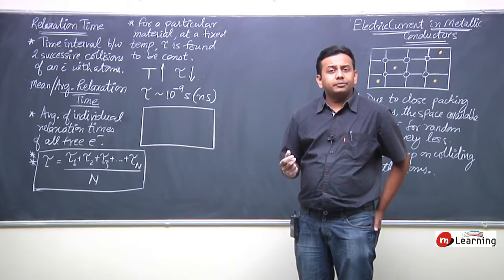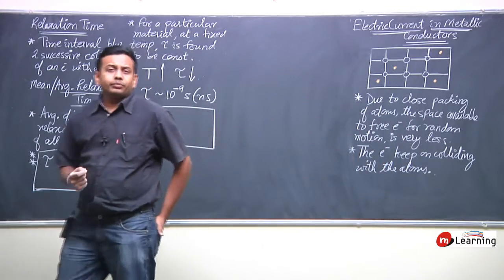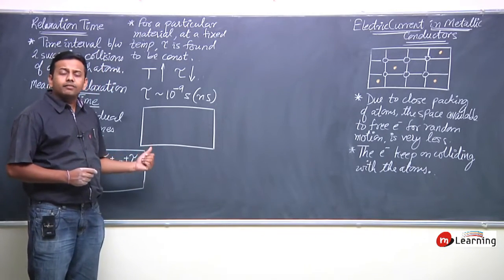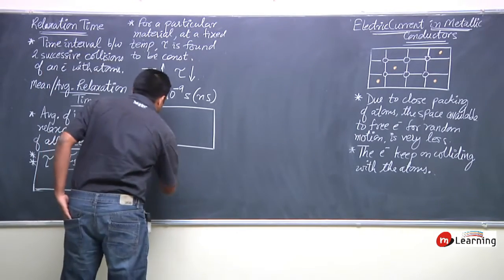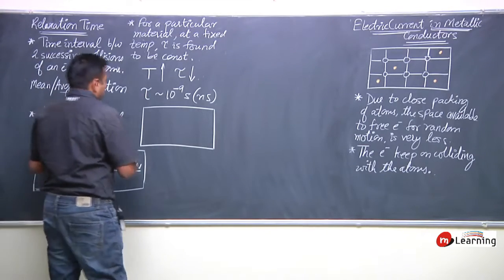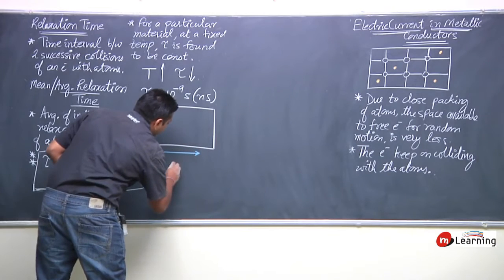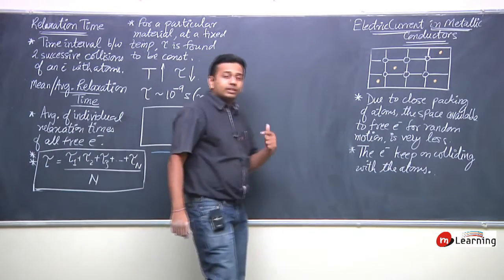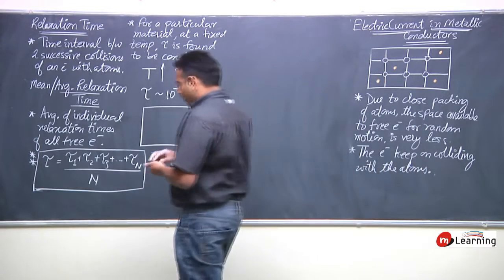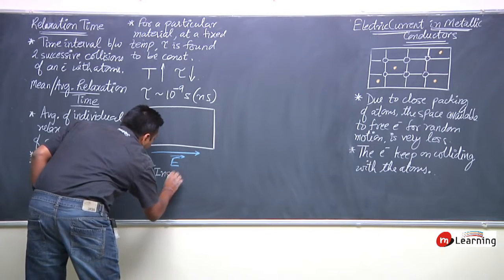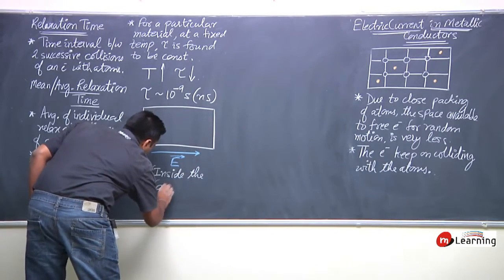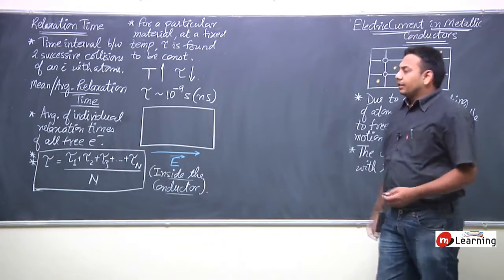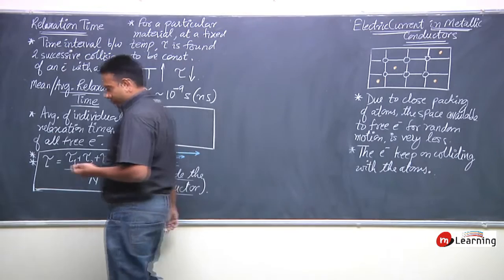We will understand how that happens going forward. But for now, suppose that somehow an electric field is developed inside this metallic conductor — in this direction — inside the conductor.